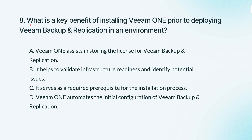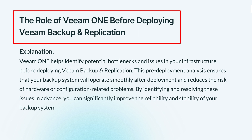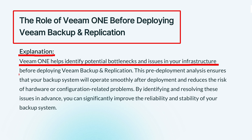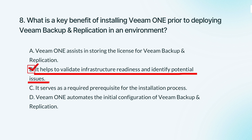Question 8. What is a key benefit of installing Veeam ONE prior to deploying Veeam Backup Replication in an environment? The knowledge points of this question are the role of Veeam ONE before deploying Veeam Backup Replication. Veeam ONE can help spot problems in your infrastructure before you set up Veeam Backup Replication. This pre-check makes sure everything runs smoothly later on, preventing issues that could cause headaches down the road. Veeam ONE can help you check your system for potential issues before deployment, ensuring the stability of the backup system.